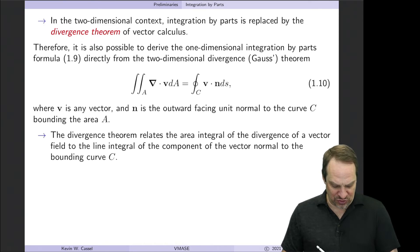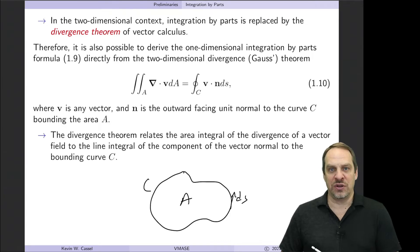So let's say we have a situation where we have a bounding curve C, which bounds the area A. ds is a little differential piece along the curve C. And then n is going to be the normal vector that's everywhere normal to that curve C. So as we go around, it's always going to be normal.